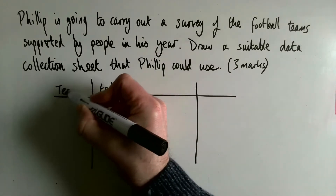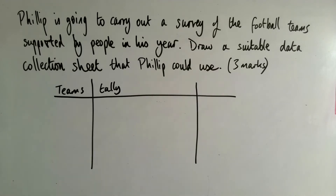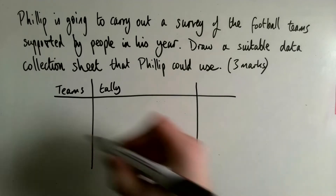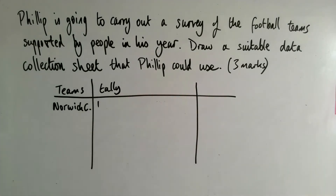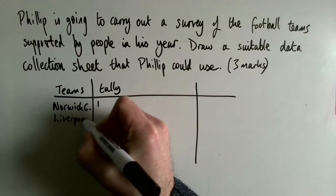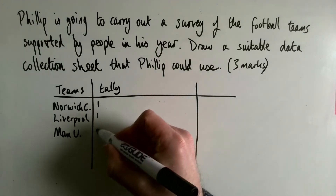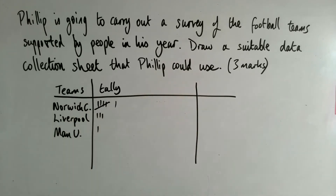He would have his teams going down the side. He wouldn't write down every football team he could think of straight away — he would probably write down the big few, or just go and start asking people in his year which football team they supported. So if he asked the first person, it's probably going to be something like Norwich City. He would put a tally down there, then ask someone else — it might be Liverpool, or Manchester United. A Liverpool person would have said that, and you might have a few Liverpool fans and a few more Norwich City fans. When you get to five, of course you do the grouped tally.